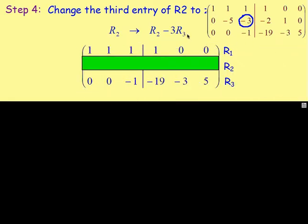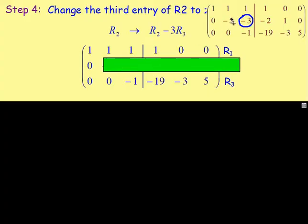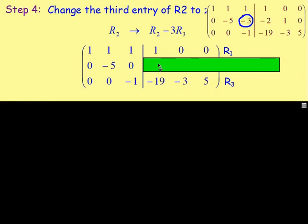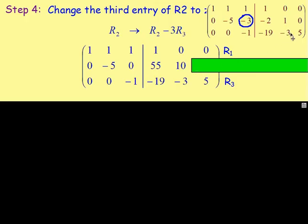Doing that then: row 1 remains as it is, row 3 remains as it is, and it's row 2 that is changing. Row 2 goes to row 2 take away 3 times row 3. So: 0 take away 3 times 0 is 0; negative 5 take away 3 times 0 is negative 5; negative 3 take away 3 times negative 1 gives us 0 — that's what we want; negative 2 take away 3 times negative 19 gives us 55; 1 take away 3 times negative 3 gives us 10; 0 take away 3 times 5 gives us negative 15. And that is our new row 2.